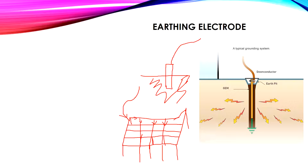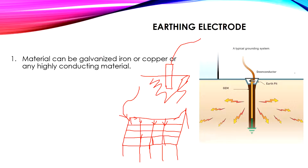The equivalent resistance is the resistance of the conductor in parallel with the equivalent resistance of the electrodes. We can form a grounding grid of only conductors, or form a grounding grid of electrodes and conductors. The material of the electrode can be galvanized iron, copper, or any highly conducting material, because we need to take the current to the ground.